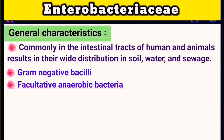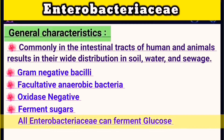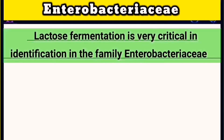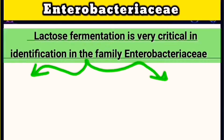They are also facultative anaerobes, meaning they can survive in the presence or absence of oxygen. They are oxidase negative and are generally able to ferment sugars, specifically glucose. However, not all species can ferment lactose, which is considered a critical differential factor in Enterobacteriaceae identification.